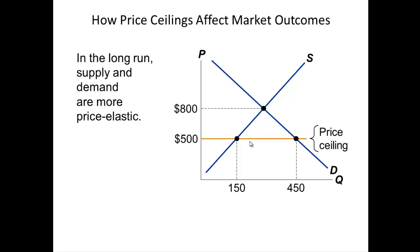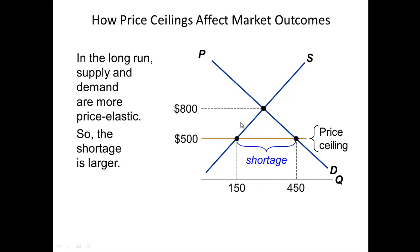Now let's talk about the long-run effect of price ceilings set below market value. In the short run we already have a shortage, but over time there is more and more shortage. Buyers will either change their tastes and preferences — remember demand curve shifters — or they will continue to deal with the shortage. Suppliers may alter what they try to supply, but they can only supply so much. Over the long run, you still end up with a larger shortage.